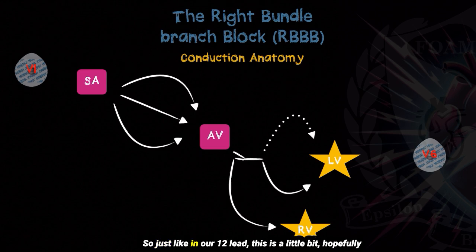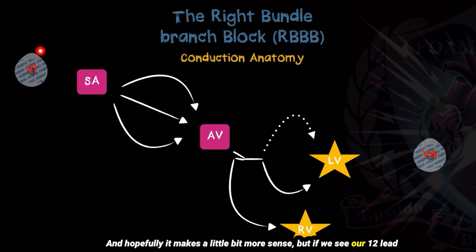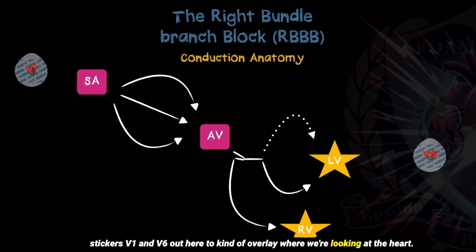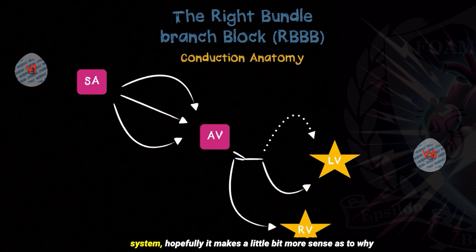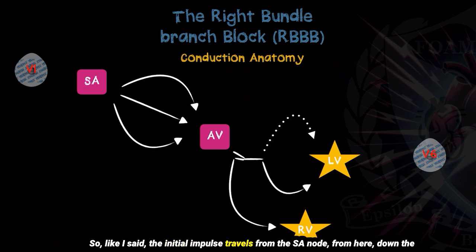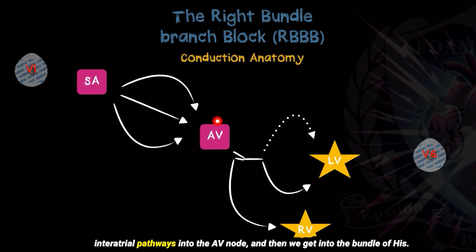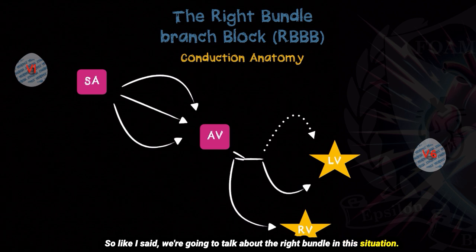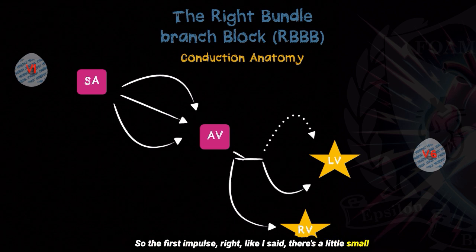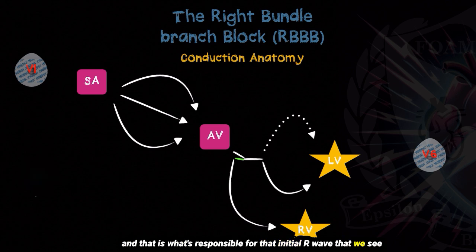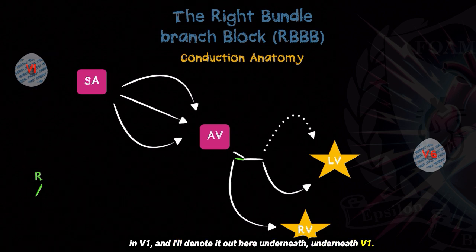I want to talk about why this occurs. With our 12-lead sticker positions, V1 and V6 overlaid on the heart, we can follow the cardiac conduction system to understand why we see an RSR prime and a deep S wave in V6. The initial impulse travels from the SA node down the interatrial pathways into the AV node, then into the bundle of His. There's a small physiologic section of the right bundle that comes back up towards the AV node, and that is what's responsible for that initial R wave we see in V1.